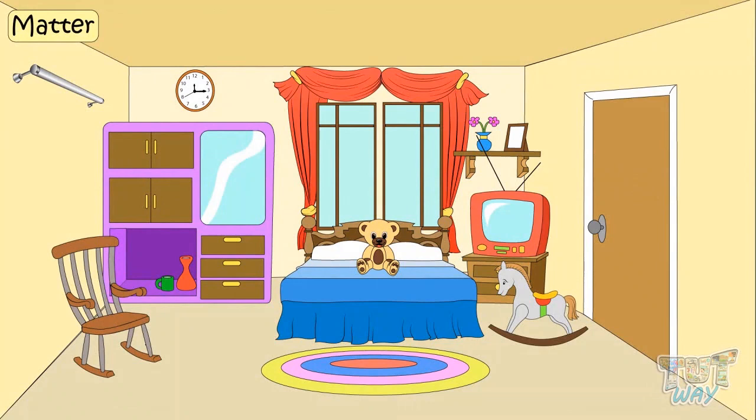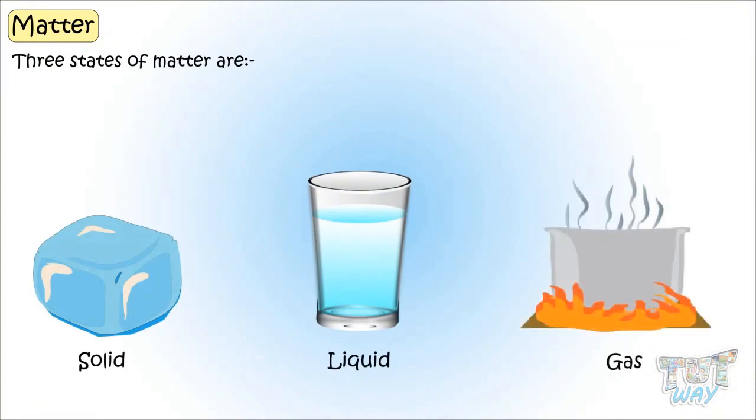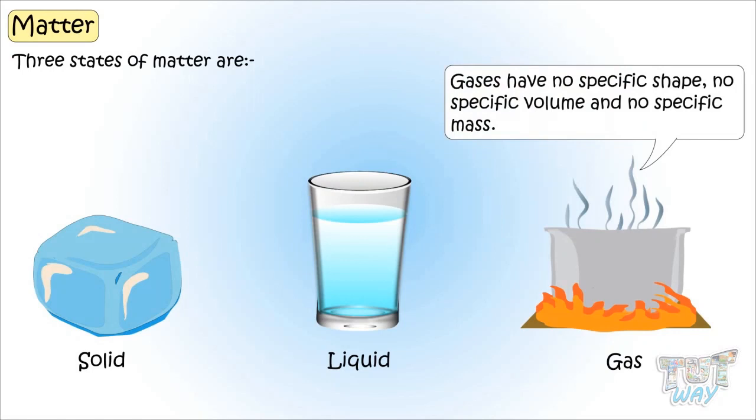Kids, we know everything around us is made up of one or the other form of matter. The three states of matter are solids, liquids, and gas. Gases have no specific shape, no specific volume, and no specific mass.